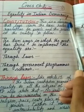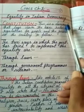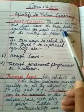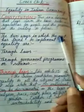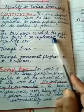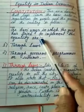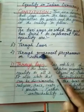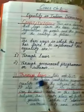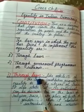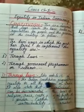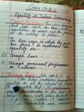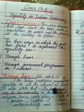There are rules and regulations for the people and the government. The two ways in which the government has tried to implement equality are: through laws, and through government programs or schemes. According to laws, Article 15 of the Indian Constitution guarantees equality to all citizens of India.